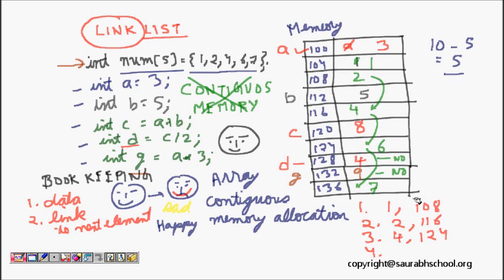Element 4 has a next pointer at address 124, which holds 6, whose next pointer points to 136, which holds 7. Each element has a link to the next element — this chain of data and next-pointers is the linked list. This understanding will make the next lecture very clear.